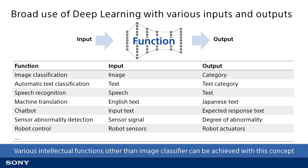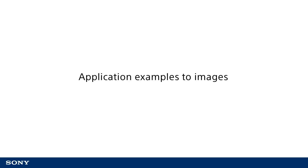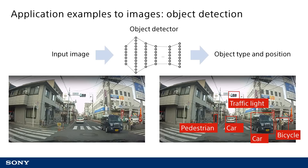A truly wide variety of functions can be achieved by changing input and output in this way. This general versatility is one of the main reasons that deep learning is called a disruptive technology. I will now explain this ability to achieve a variety of applications by changing input and output with some more concrete examples, beginning with an example of application to images — specifically, object detection.